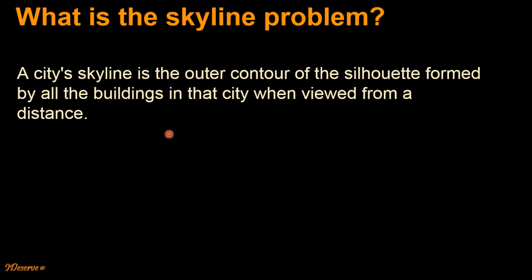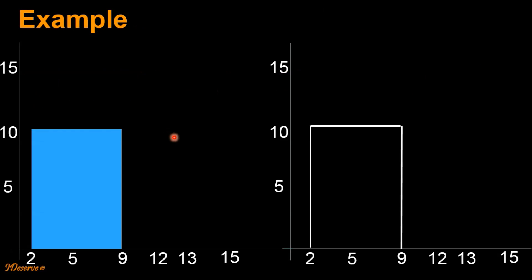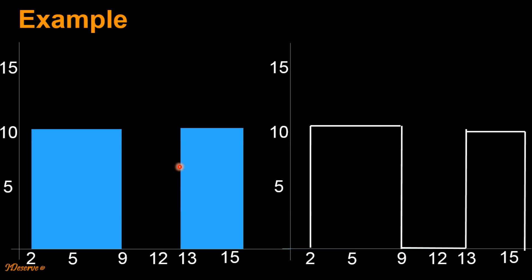Let's look at some examples to get a clear understanding. In this first example, if we have only one building then the skyline for that would look like this. If we had two buildings present, then our skyline would look like this. The skyline has the outer boundaries for these two buildings, with a horizontal line starting from 9 and ending at 13 which connects these two boundaries. This line indicates the presence of ground between these two buildings.